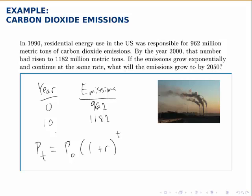With these two pieces of information, we can fill everything in except for r and then solve for that missing piece. If year zero is 1990, the amount at year zero is 962, and when t is 10, p is 1182. Filling in all those pieces, we notice that r is the only unknown and we can solve for that.